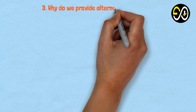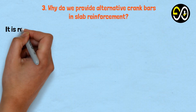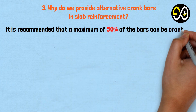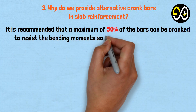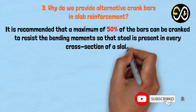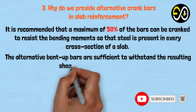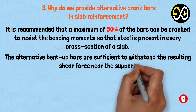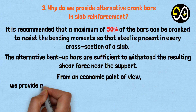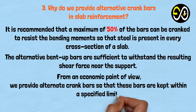Why do we provide alternative crank bars in slab reinforcement? It is recommended that a maximum of 50% of the bars can be cranked to resist the bending moments, so that steel is present in every cross-section of the slab. The alternative bent-up bars are sufficient to withstand the resulting shear force near the support. From an economic point of view, alternate crank bars are provided so that these bars are kept within a specified limit.